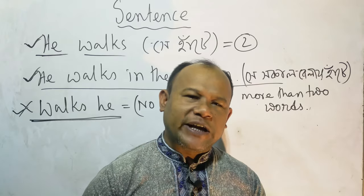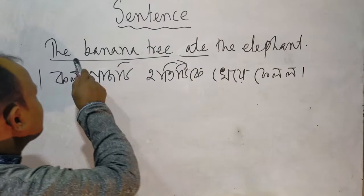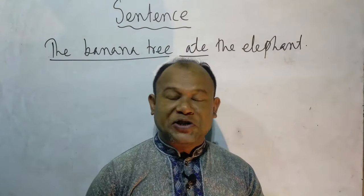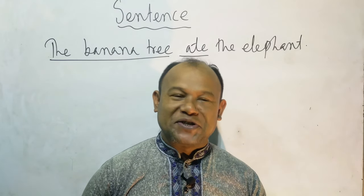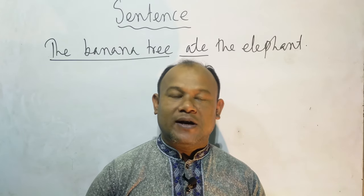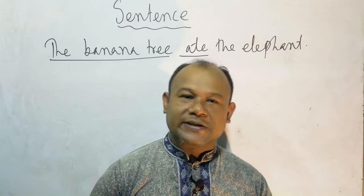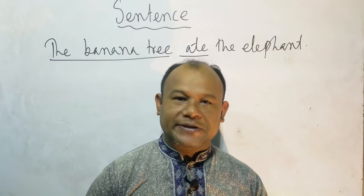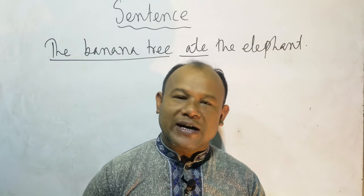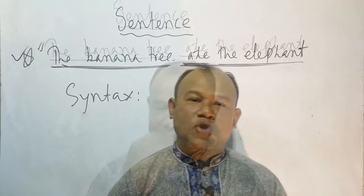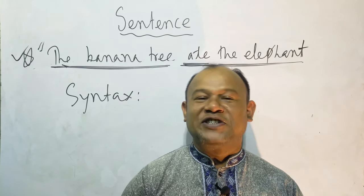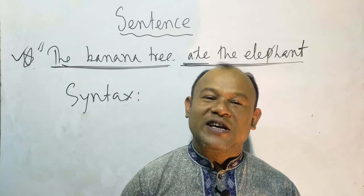'The banana tree ate the elephant.' Though the sentence has a meaning, though the sentence has a subject and a predicate — a subject and a finite verb — in some cases we can say it is a sentence, but in other cases we can't. Normally, we have to think that if a sentence has the characteristics of syntax and semantics, the very group of words is called a sentence.